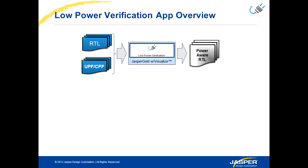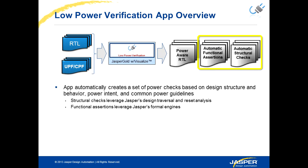The Low Power Verification app takes the RTL and the power intent described in either UPF or CPF to create a Power Aware Netlist. Together with that, it also creates functional assertions and structural checks from the RTL with the UPF or CPF. With those, you can have a baseline for verification of the low power functionality of your design.